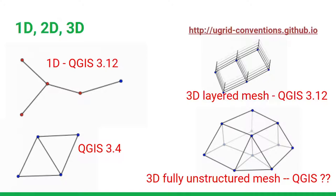What's upcoming in new QGIS releases, mainly 3.12: right now you have standard 2D meshes, but we'd like to support 1D meshes — for example for sewer systems or rivers modeled as 1D — and 3D layered meshes. For example, with a river you want different vertical levels; the UGrid convention supports this. Fully 3D meshes are not planned yet but hopefully we'll get there later. For MDAL and QGIS 3.12 we already have a plan to implement 1D and 3D layered meshes. A layered mesh means you have a 2D mesh that is copied at different heights.